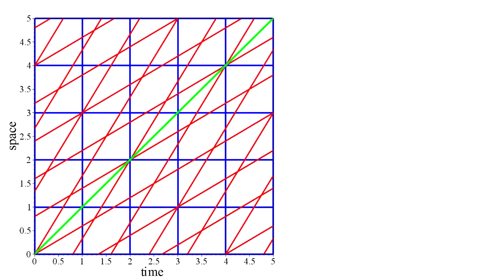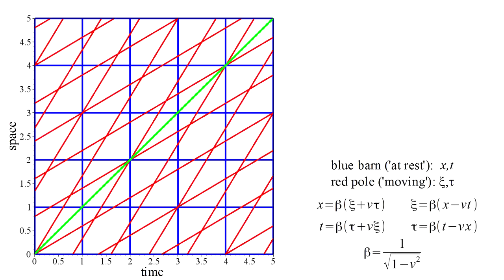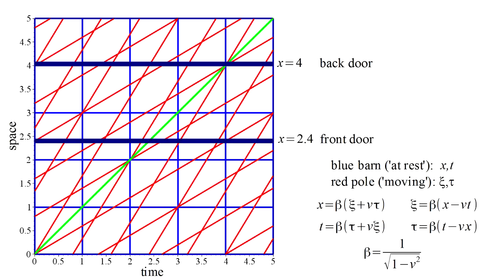Plotting the relation between the coordinate systems using blue for the barn and red for the pole, we get the sort of space-time diagram we've seen in previous videos. The numerical labels apply to the blue coordinates. Recall that the green line with slope of unity represents the speed of light. The back door is located at x equals 4 and the front door at x equals 2.4. The tail is at xi equals 0 and the head at xi equals 2.